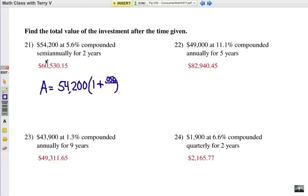Alright, number 21. You can see your answer here, and here's how we got it. You take your principal, 54,200, times one plus. Take your interest rate, .056, and it's semi-annually compounded. That means that you're going to divide it by two. It gets compounded twice a year. Now, if it's compounded twice a year, and you're going to invest for two years, then that, of course, would be four compoundings. So, that would be your exponent on the outside.